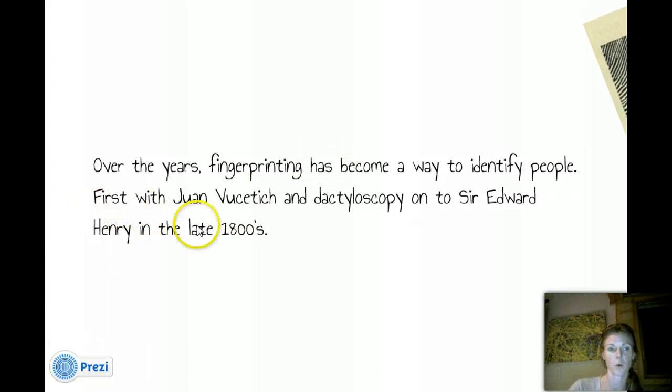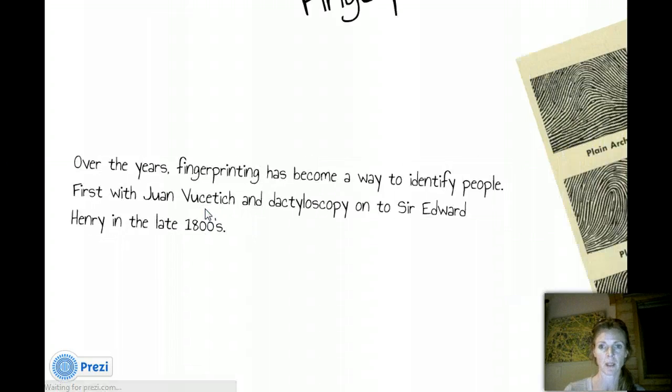Okay, so, again, good old, first with Juan Veriter. No, I don't know. Like I said, I don't know if that's how you say it. He probably spits a lot when he says his last name. But he came up with dactyloscopy, which is basically studying the fingerprints in depth. Okay, looking at the patterns. And then on to Sir Edward Henry in the late 1800s that came up with more of an efficient way to analyze these fingerprints. So, basically, both of these guys were really looking at fingerprints as a way to identify and mark somebody as, yes, these are yours, this belongs to you, you are part of the crime scene.